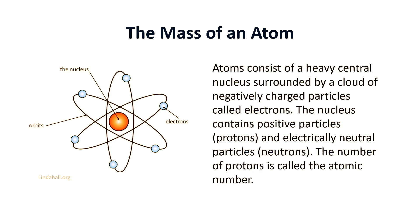So what is the mass of an atom? An atom is the smallest particle into which an element can be divided without losing its chemical identity. Atoms consist of a heavy central nucleus surrounded by a cloud of negatively charged particles called electrons. The nucleus contains positive particles called protons and electrically neutral particles called neutrons. The number of protons is called the atomic number — this number uniquely identifies each chemical element. In turn, protons and neutrons are composed of quarks.